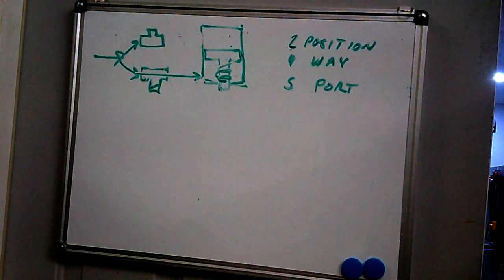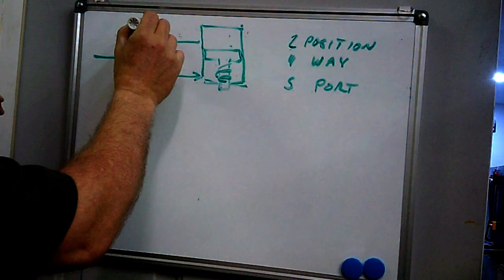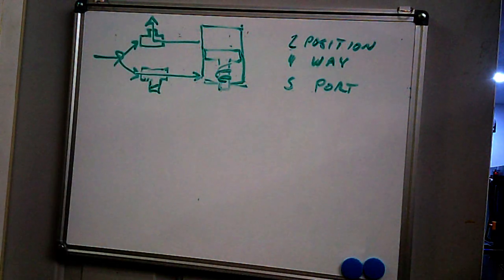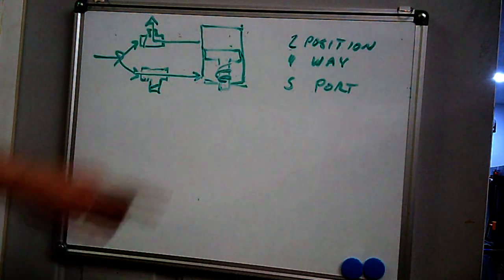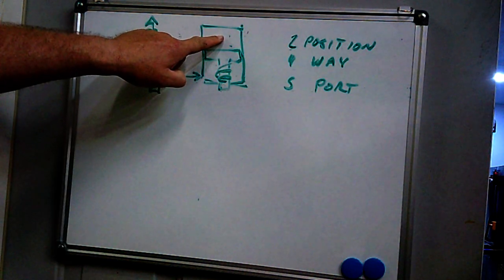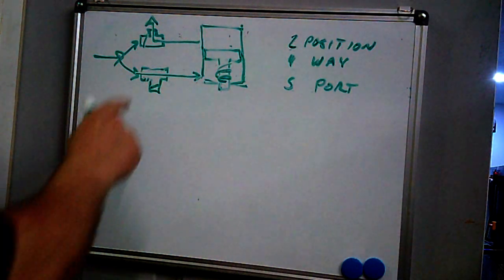And any air that's in here will flow like this out through the exhaust port. This is closed off so that any air that's in here can be escaped or be pushed out. When you push the button, flip the switch, actuate the valve, whatever you do to actuate the valve, what happens is...